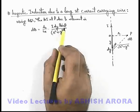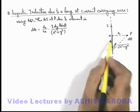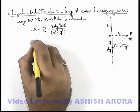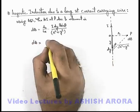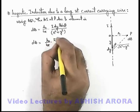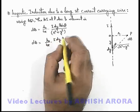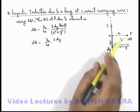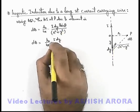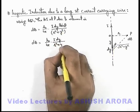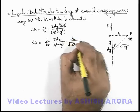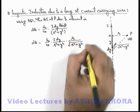If we substitute the value of sinθ from the triangle, which is given by r / √(r² + y²), then dB becomes (μ₀/4π) · i·dy · [r / √(r² + y²)] divided by (r² + y²), which simplifies to (μ₀/4π) · (i·r·dy) / (r² + y²)^(3/2).